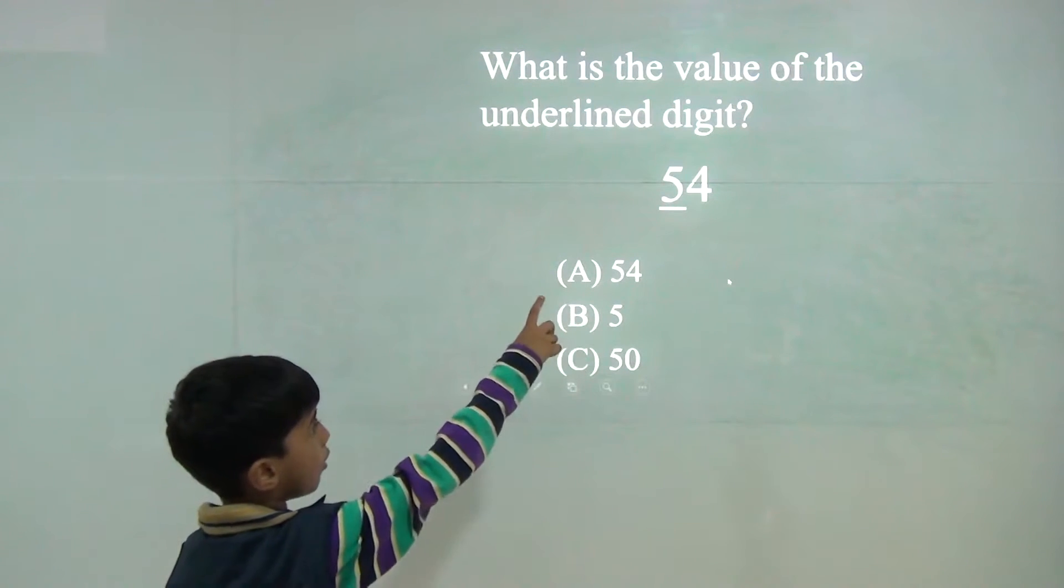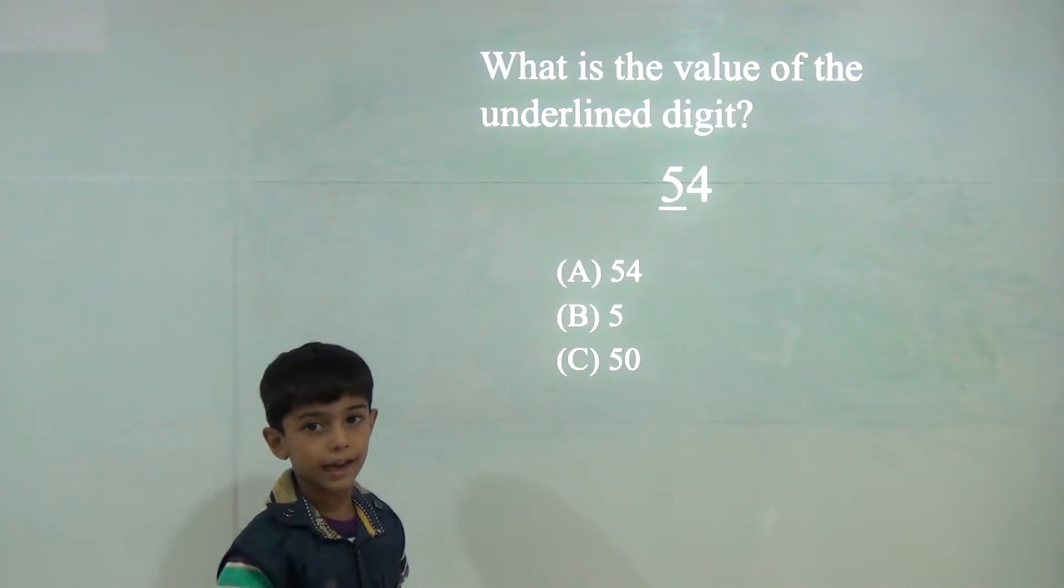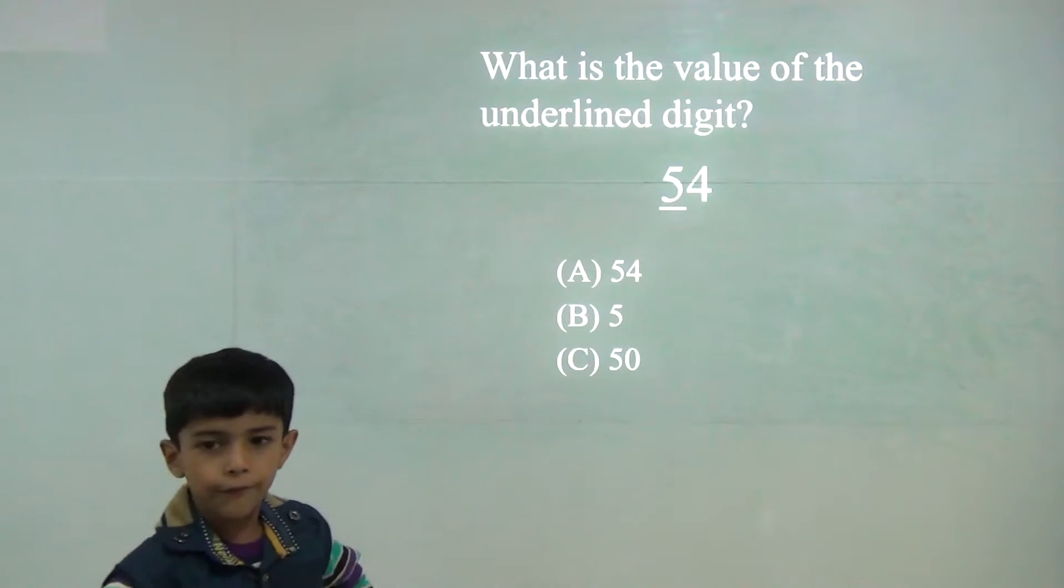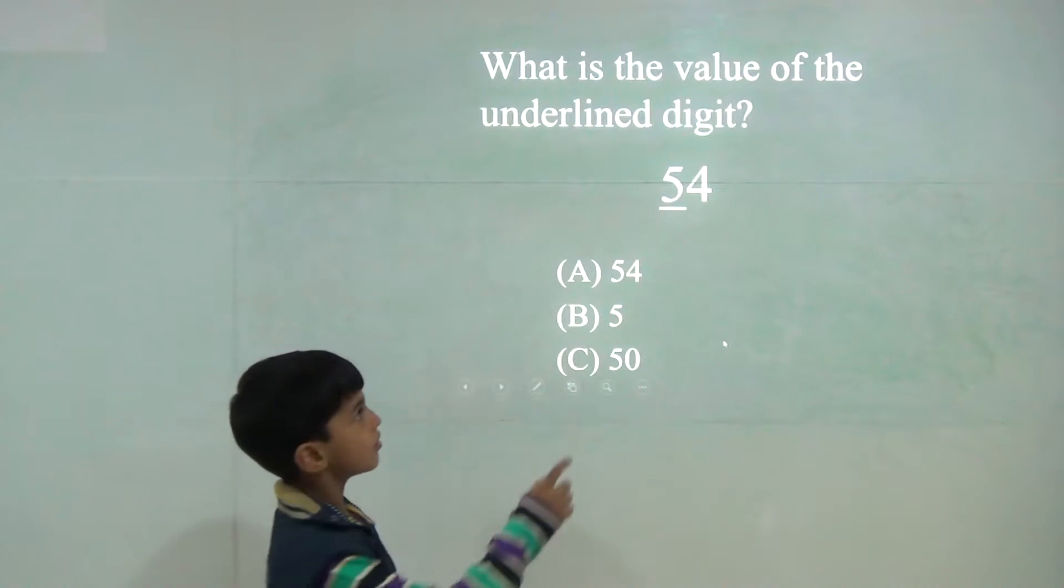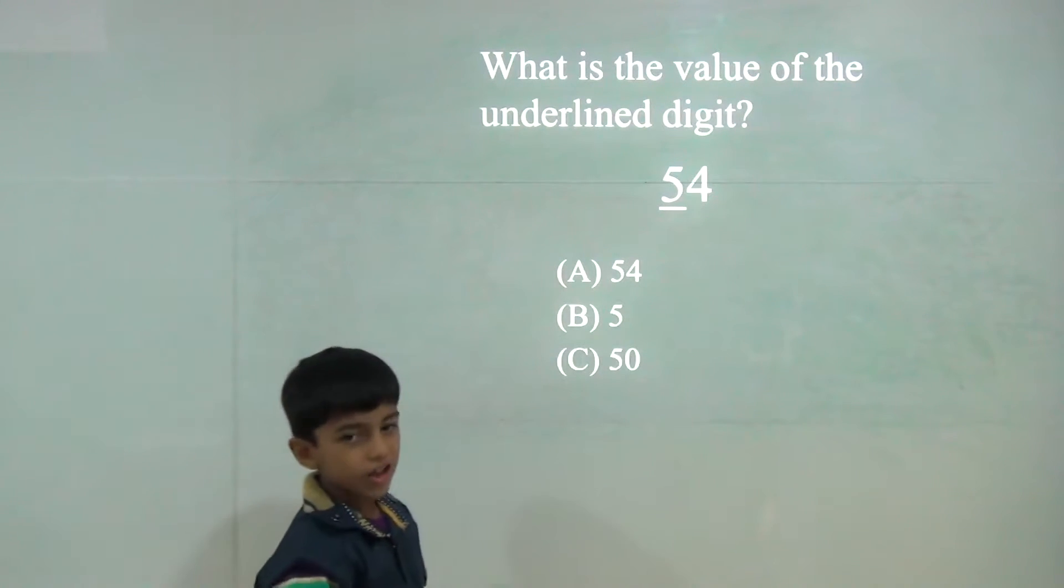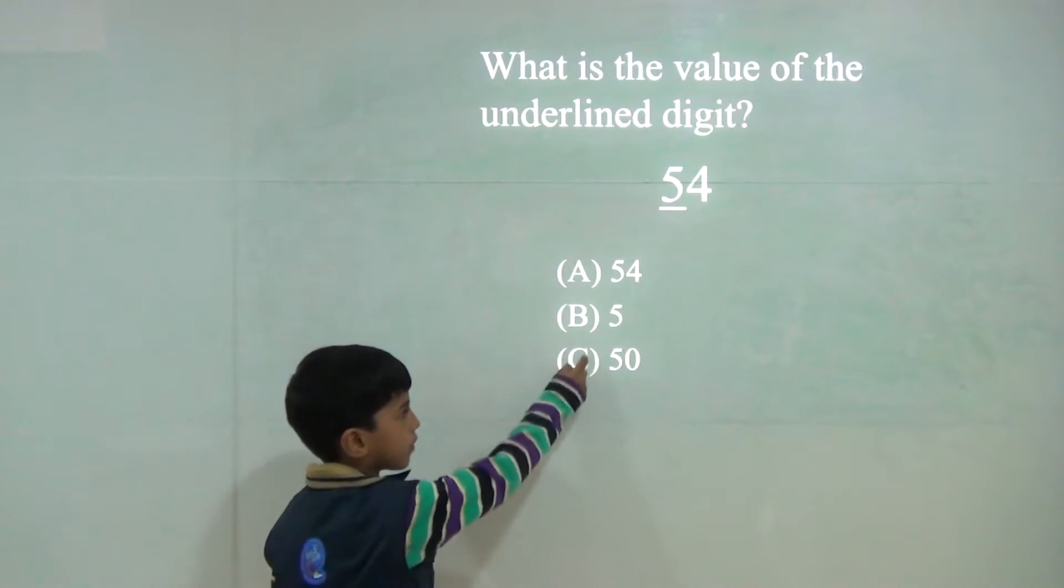Now the 5 is on tens place. So 5 tens would be 50. It will not would be 10 because there is 5. Now 50. So answer would be C.